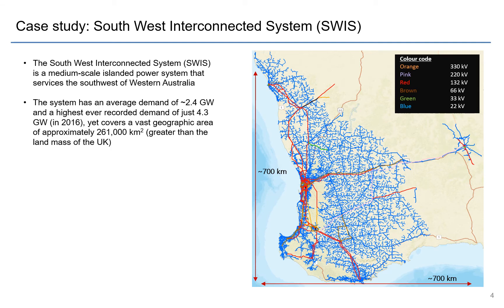The SWIS has an average demand of 2.4 gigawatts and a highest-ever peak demand of just 4.3 gigawatts in 2016 — we haven't reached that again yet, though we've come close. However, it covers a huge geographic area of 261,000 square kilometres, which is greater than the landmass of the UK — roughly 700 kilometres north-south and 700 kilometres east-west. While it's bigger than the UK geographically, the UK's national grid has something like 50–60 gigawatts of load, so it's significantly larger in power terms.